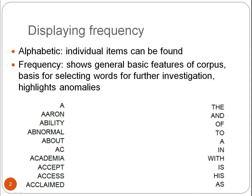A word frequency list can usually be displayed in a corpus linguistic software program in alphabetic order or in order of frequency. In the list on the left, the first word is 'a', followed by other words starting with 'a', regardless of the corpus frequency. This is the alphabetic list.